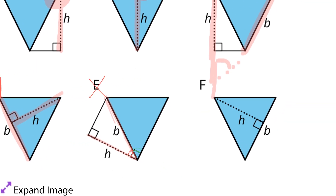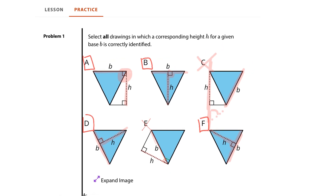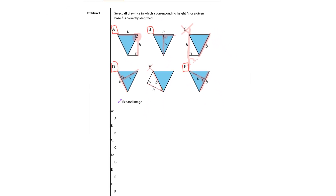C has a base B and a height H that don't even meet on the drawing — I'd have to extend this all the way out, and they certainly aren't going to meet at a right angle, so C is not a possibility. If we look at D, the base B and height H meet at a right angle, so D is a possible solution. F is more normal — base B and height H do meet at a right angle, so F is a solution. Our solutions are A, B, D, and F.